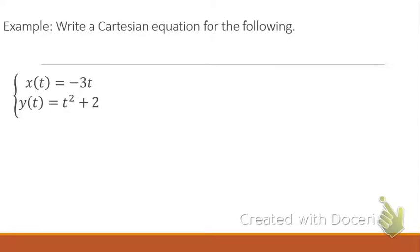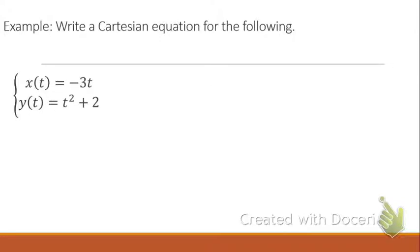Looking at these two equations, I'm writing a Cartesian equation, which means I'm combining x and y to create one equation, eliminating the t parameter. So there are two red lights, or two things that we cannot do: one is take the square root of a negative number, and the other is divide by zero. Do we have any one of those issues in these two original functions?